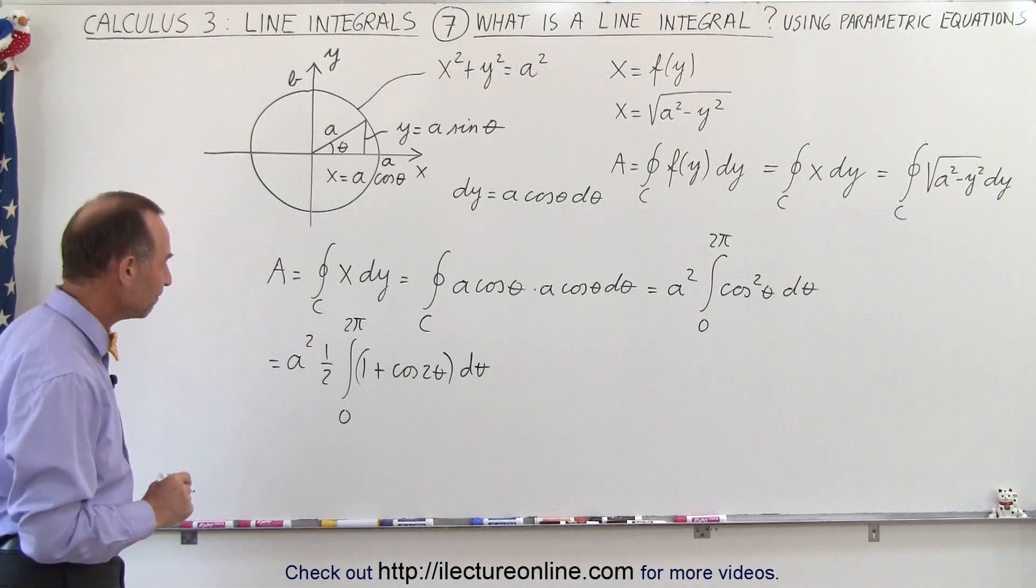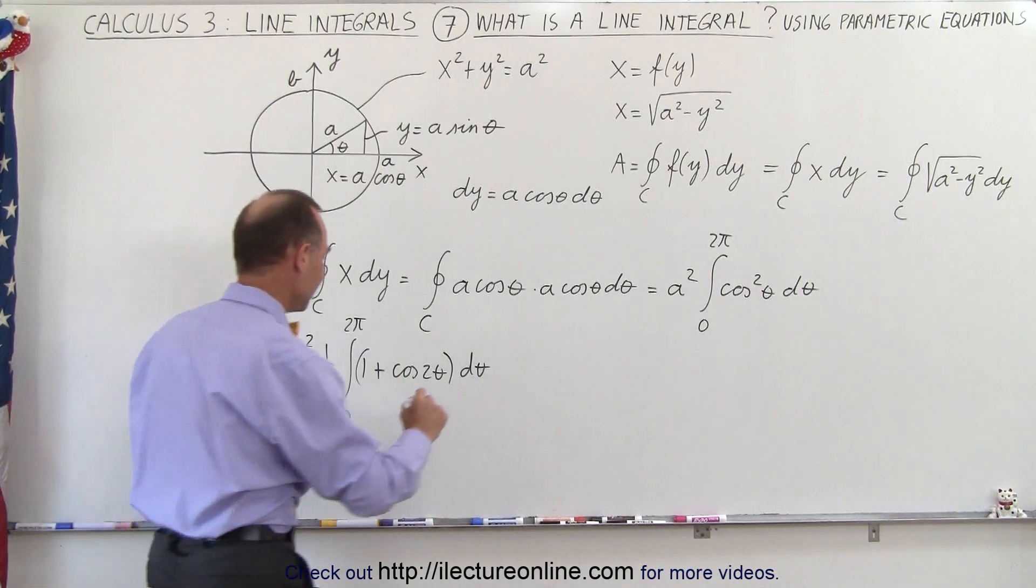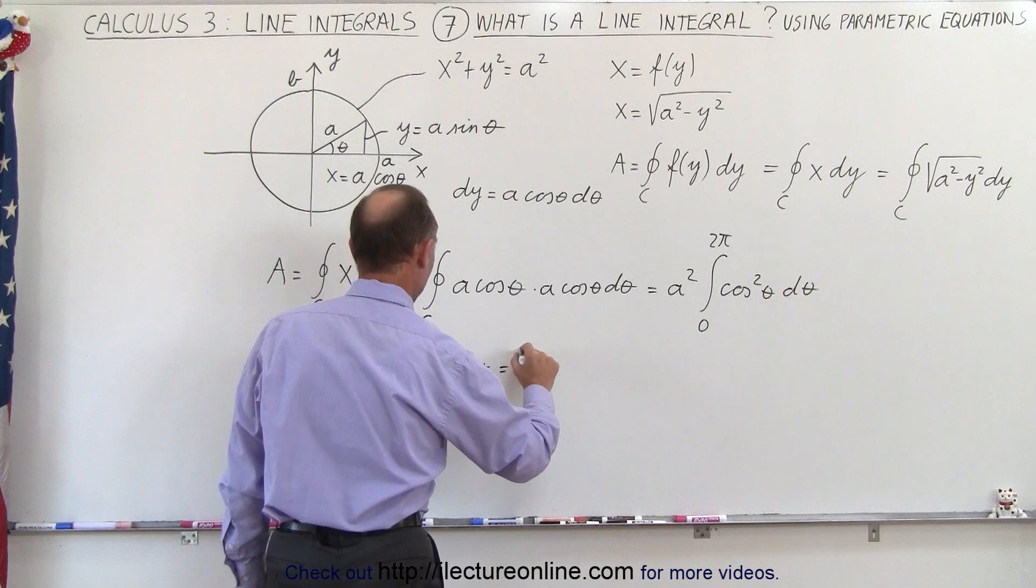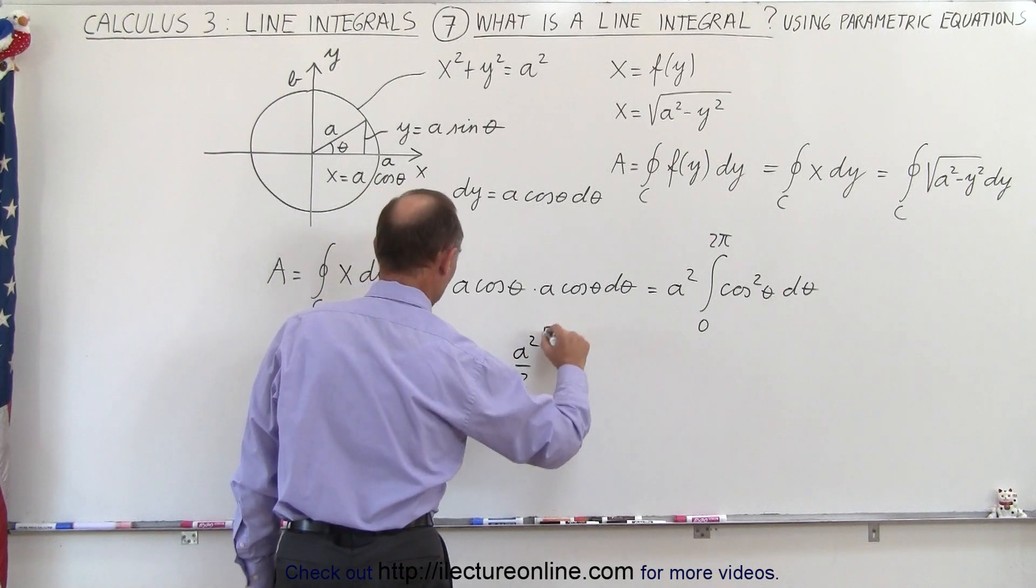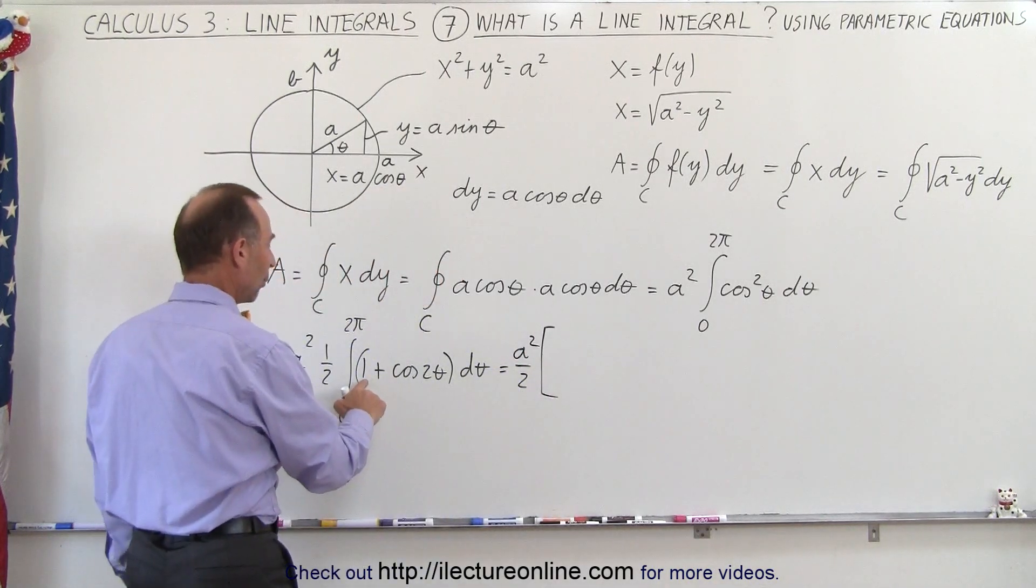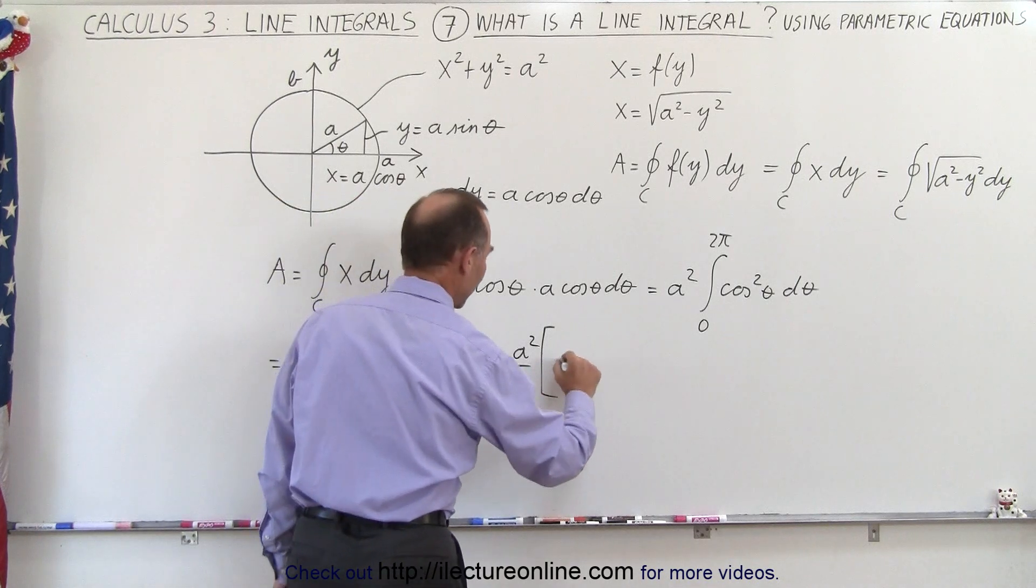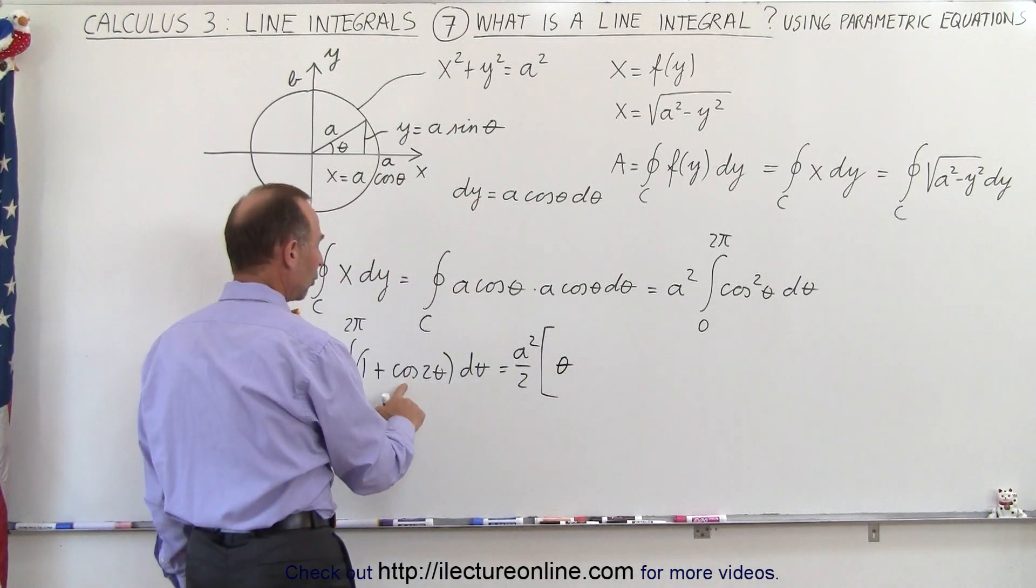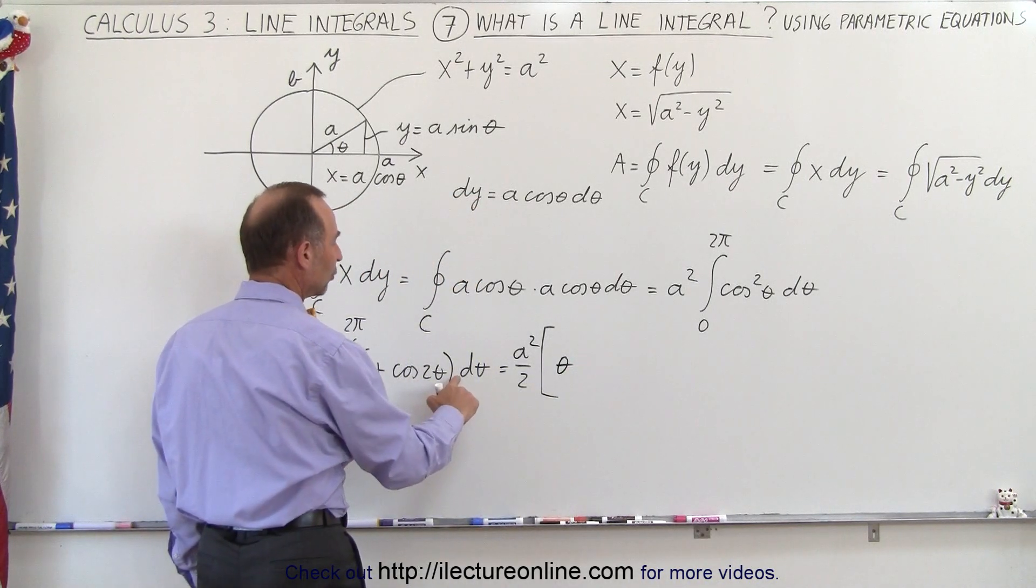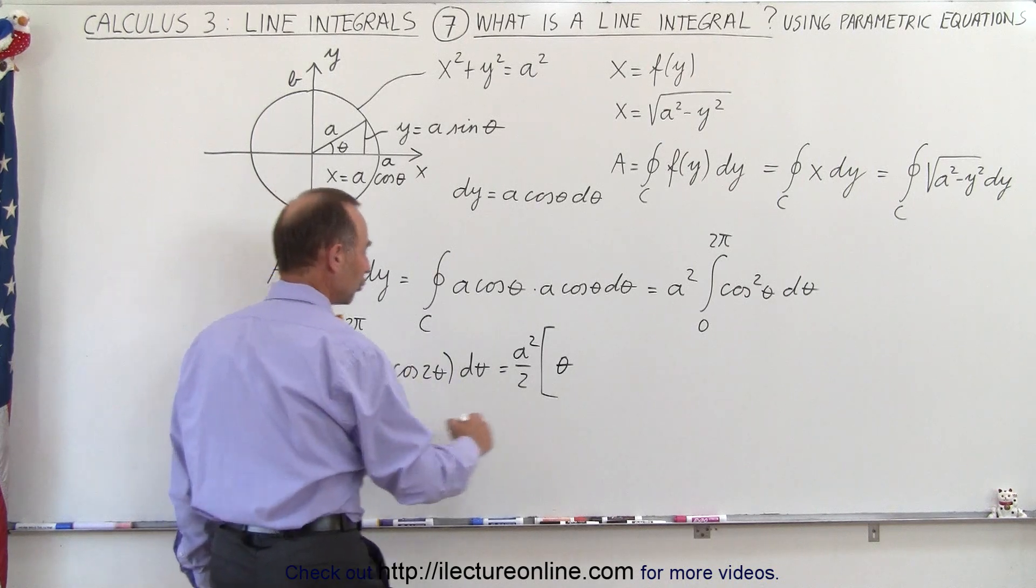And that's a whole lot easier to integrate. When we do that, we get the following. This is equal to a squared divided by 2 times, when we integrate 1 times d theta, it gives us theta. And the cosine of 2 theta, of course, we're going to need a 2 d theta, so that would be 1 over 2.